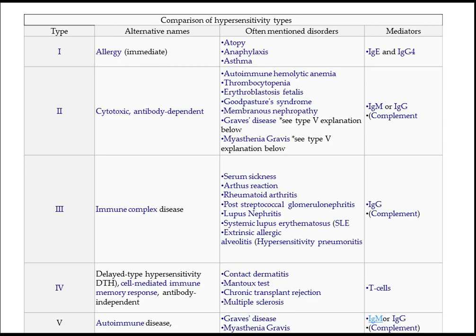Type 5, if you want to remember, is autoimmune disease — very easy to remember. Graves' disease and myasthenia gravis are the two examples for Type 5. IgM or IgG with complement are the mediators.